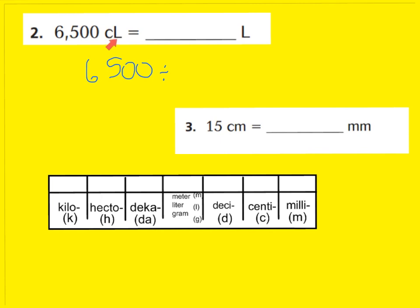Let's see by how much. I can see that my centiliters is 1 power of 10, 2 powers of 10 smaller. Therefore, I'm going to divide by 2 powers of 10, or 100. So I'm going to divide by 100. Remember, when you multiply you move the decimal to the right; when you divide, you move the decimal to the left. Because 2 is my power of 10, I'm going to move my decimal two places to the left — right behind the 5. So it would be 65 liters.